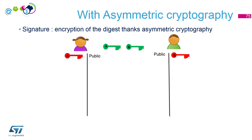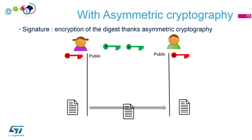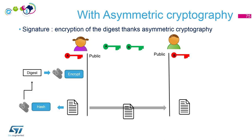Again we have Bob and Alice, each with a key pair — the public parts shown in green, the private parts in red. Alice writes her letter and sends it to Bob in clear because she's not concerned about confidentiality. She then hashes her letter to get a digest, and the digest will be encrypted using asymmetric cryptography. The question is: which key should she use?